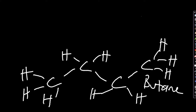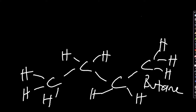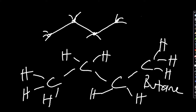Normally when drawing organic molecules we don't explicitly draw the carbons and hydrogens, because they're taken for granted — all organic molecules are based on carbon and hydrogen, so we can assume they're there. We'd normally just draw the skeleton like this: four carbons, with the hydrogens implied but not drawn.